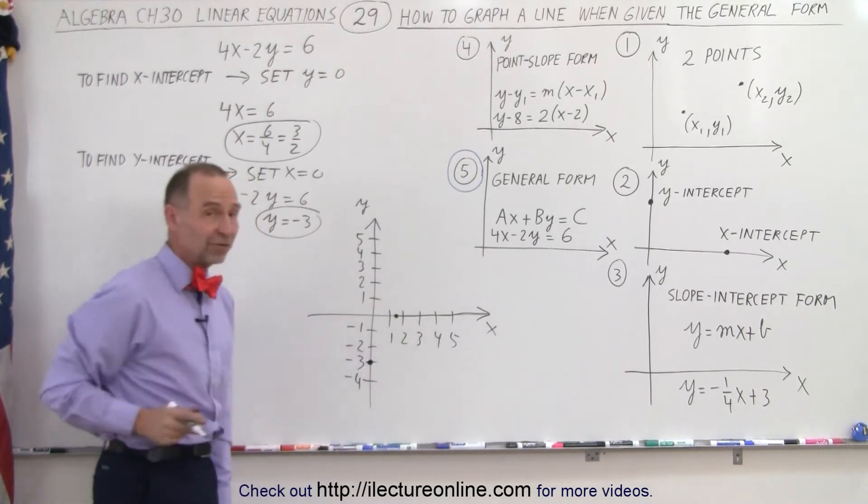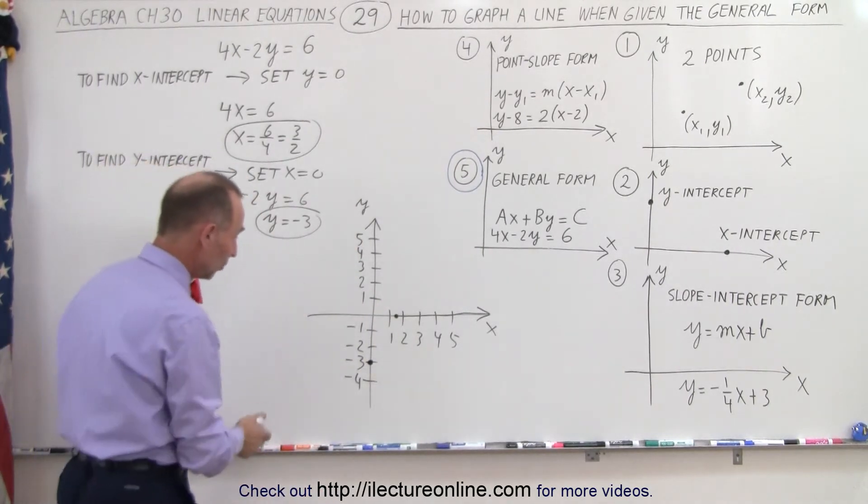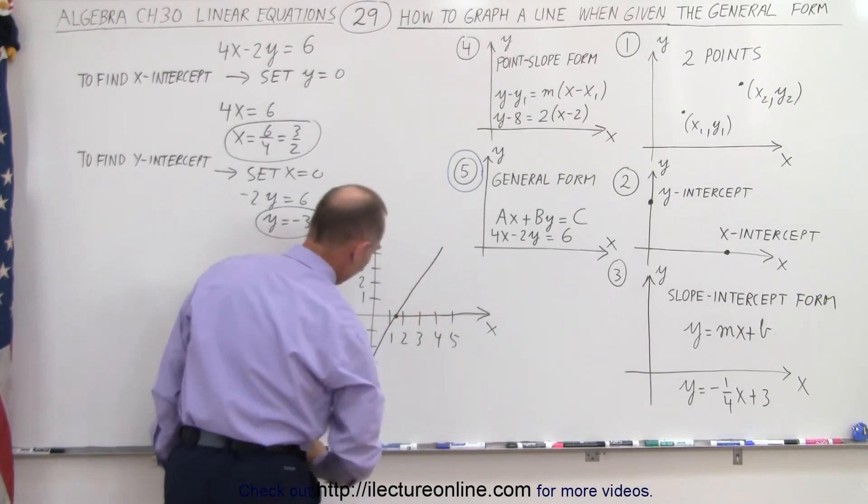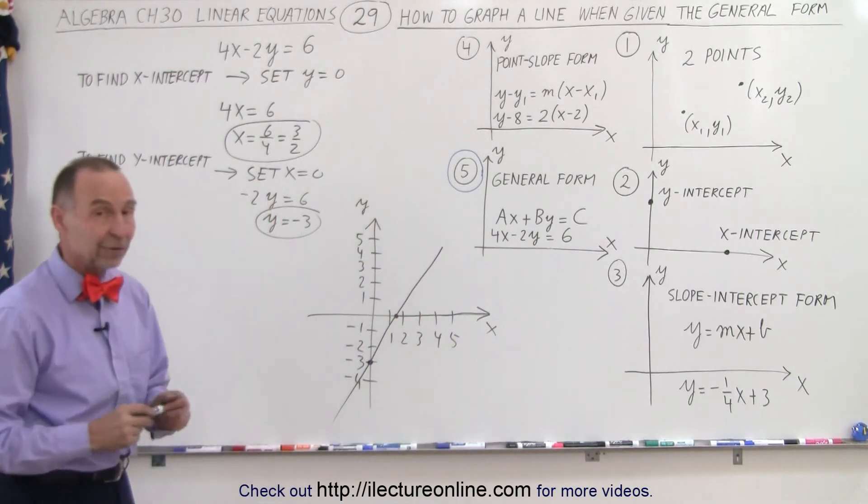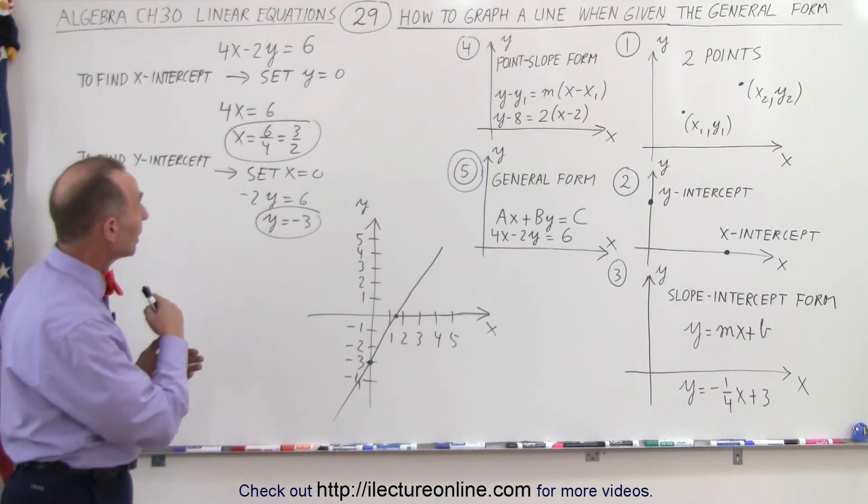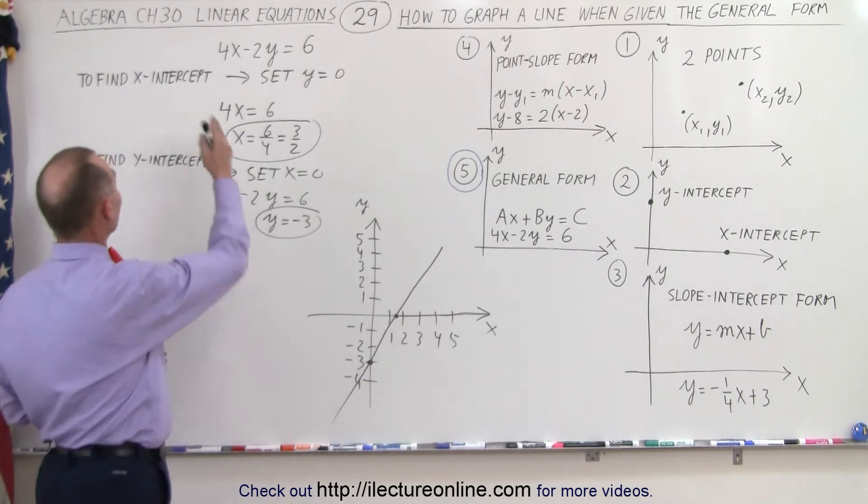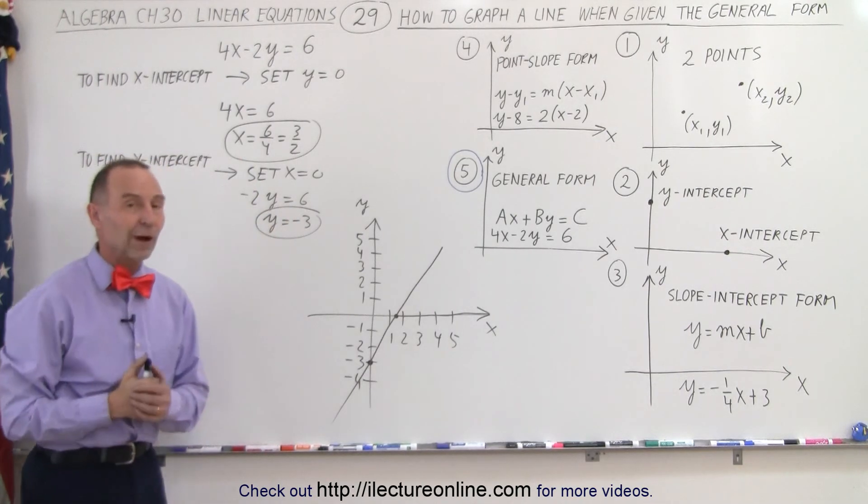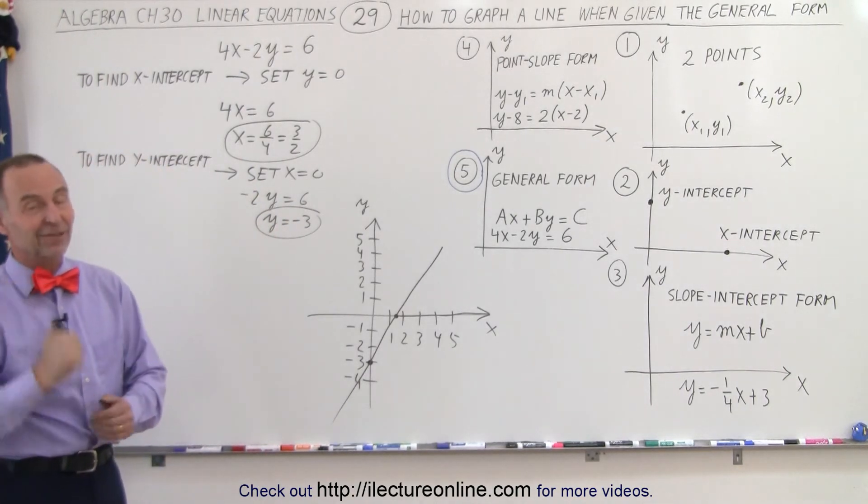And so now they have the X and the Y intercept, all you have to do is connect those two points, and you have the line represented by that equation. And notice, once we have what we call the general form, it's easier to find the X and Y intercepts. Once we have the X and Y intercept, it is easier to graph the line. And that is how it's done.